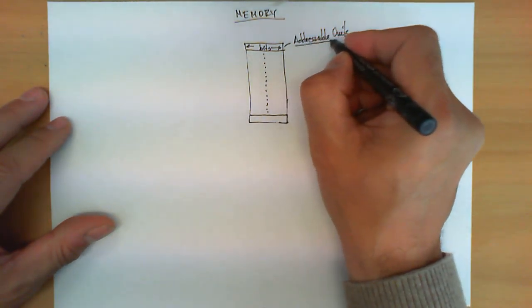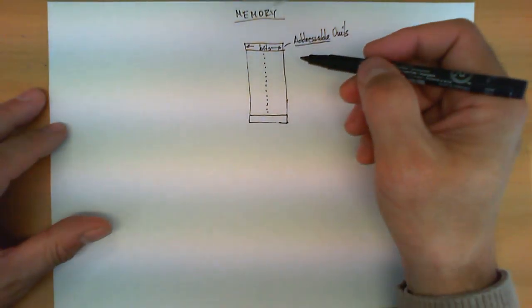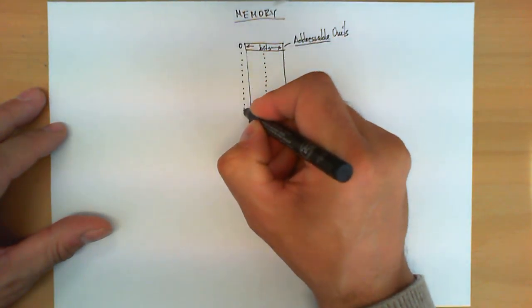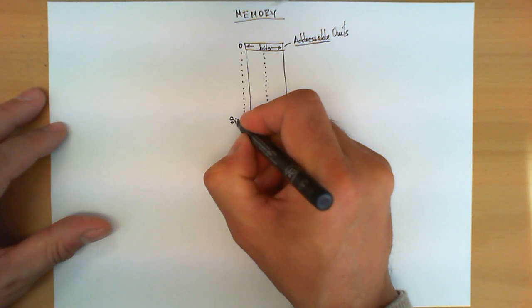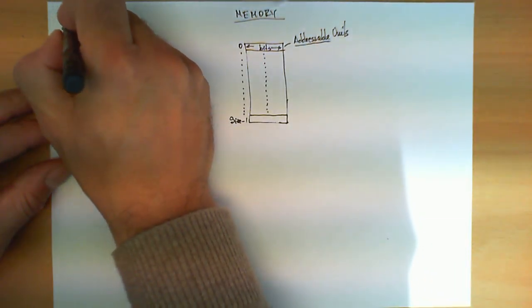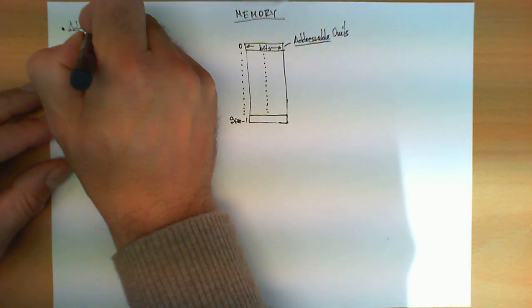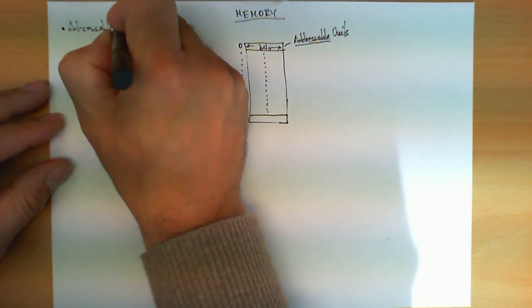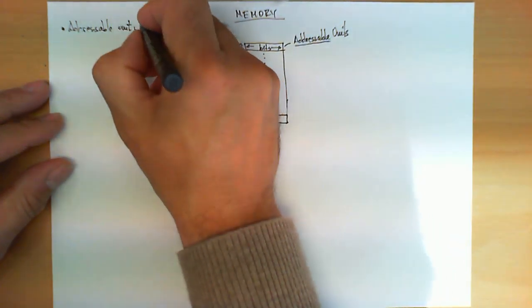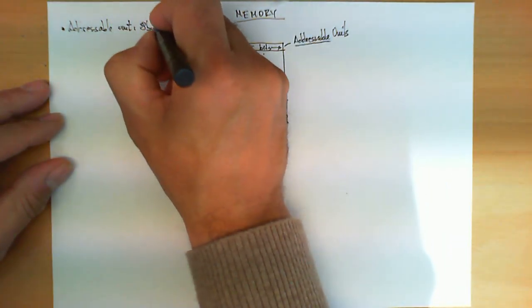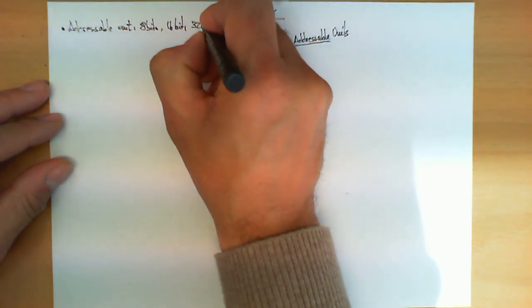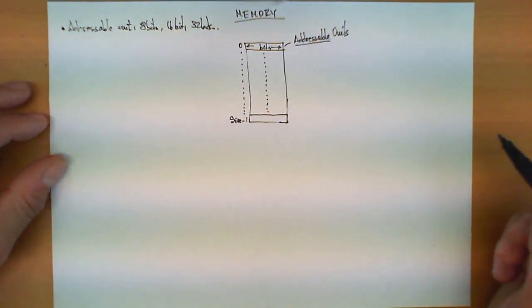Why do we call these units addressable? It's because each of them has an address which starts from 0 all the way down to size. What are the typical values of these addressable units? We can find in the market memories that can address these units of 8 bits, 16 bits, 32 bits, so on and so forth.